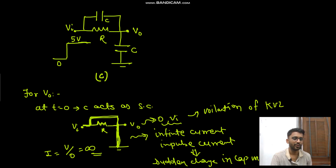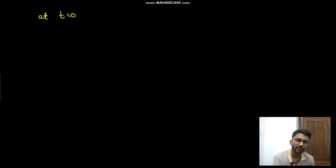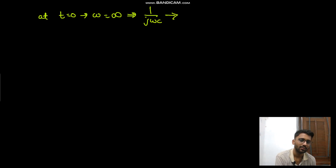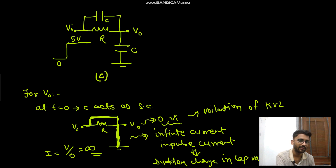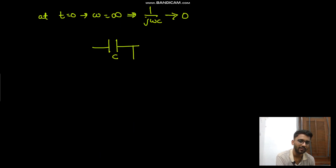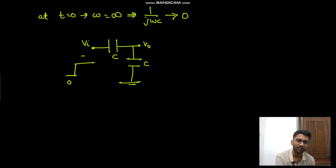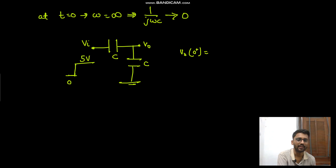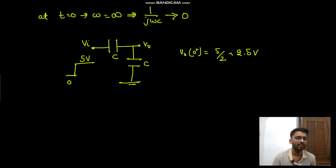Because of the KVL violation, the short circuit and open circuit concept will not be valid here. At t equals zero we have infinite frequency content, and the impedance provided by capacitance is almost zero, so the parallel combination of RC is replaced by simply a capacitor. Both are replaced by capacitors, with Vi going from 0 to 5 volts. So V0 at t equals zero-plus is 5 by 2, which equals 2.5 volts.